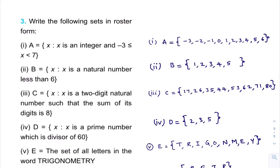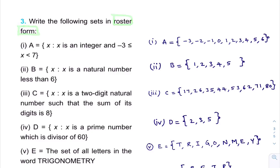In last class, we learned what is Roster Form and what is Set Builder Form. In this class, we will do a few examples related to Roster Form. In Roster Method, all the elements of a set are listed and separated by commas within brackets.